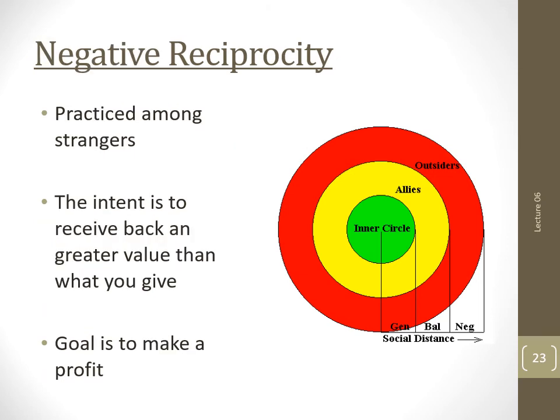Negative reciprocity takes place between strangers, or those who only know one another very slightly. The goal is to get more out of the deal than you give — to make a profit — and a return gift is expected in very short order, or even immediately. Reciprocal horse raiding among Plains Indians is a good example of negative reciprocity. After one village raided and stole horses from another, a reprisal raid was always expected in short order, and everyone's goal was always to steal more horses from their enemies than had been stolen from them in return.